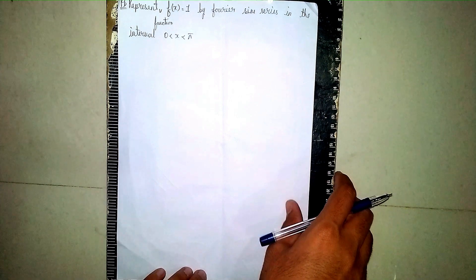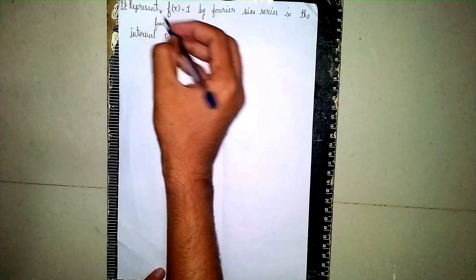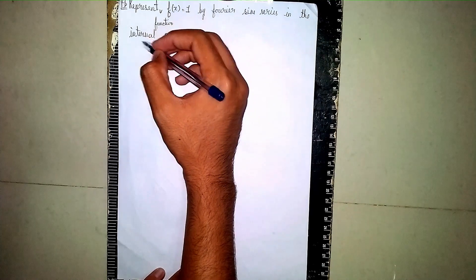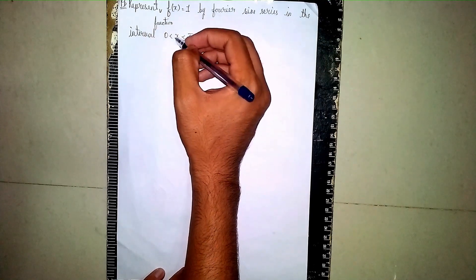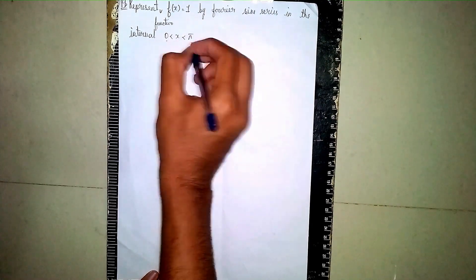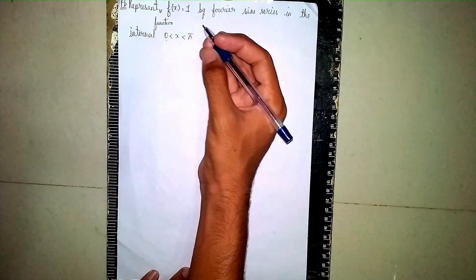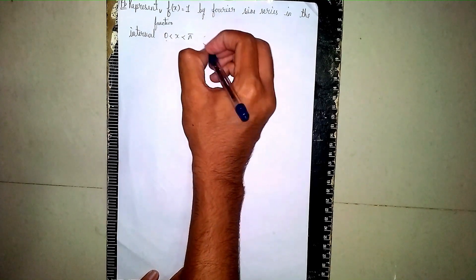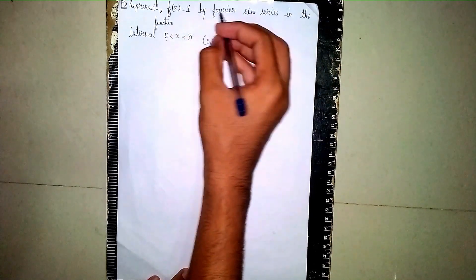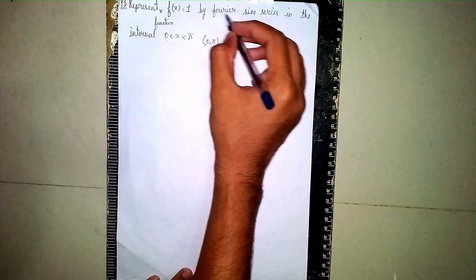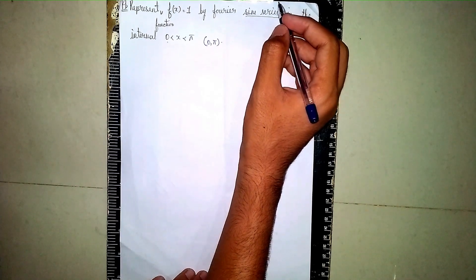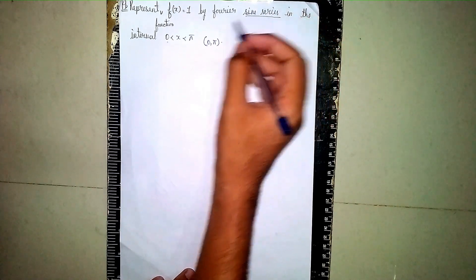Hello and welcome back to my channel 2x Coach. I represent the function f(x) equal to 1 in the Fourier sine series in the interval 0 < x < 5. These are the limits. Now we are asked to find the sine series — this is a Fourier half-range series question.